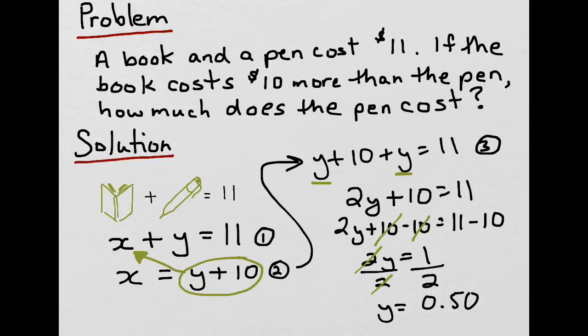Last thing to do would be to verify if we've got the right answer. Well, let's come back up to our original diagram here and say, well, if the pen cost 50 cents, and the book was 10 dollars more than that, then the book must be 10 dollars and 50 cents. And if we add those 2 together, do we equal the 11 dollars? We do indeed. Therefore, we know that our solution is correct.